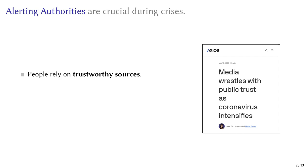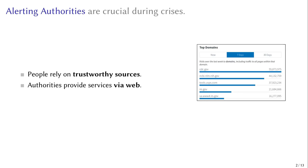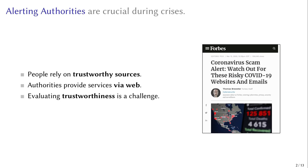Online emergency services are part of the broader critical infrastructure, and research shows that people are reliant on trustworthy sources during emergencies, crises, and disasters, which are provided among others through websites and web portals of respective authorities. At the same time, it remains a challenge for users to distinguish between legitimate and malicious online services.